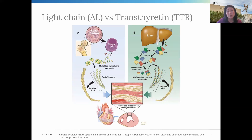The hereditary TTR type is caused by different point mutations in the TTR gene. There are several point mutations that can occur, and these cause the TTR protein to become unstable and again prone to forming amyloid fibrils. It can manifest as cardiomyopathy, but it can also manifest as polyneuropathy or a mixed phenotype, depending on the specific mutation related to the hereditary form.